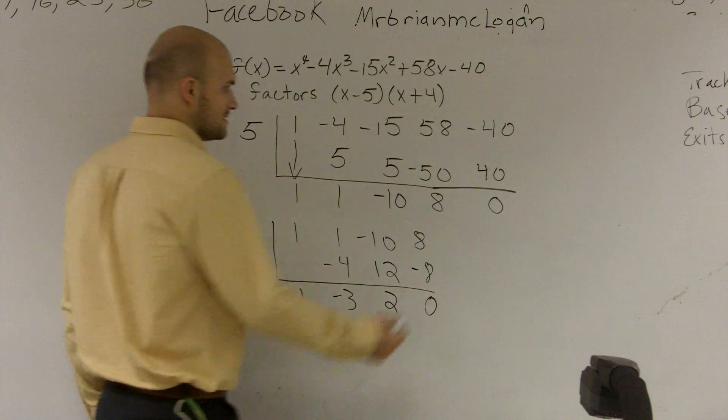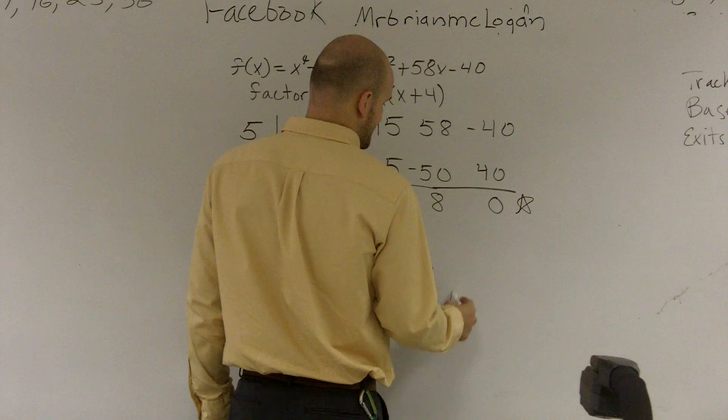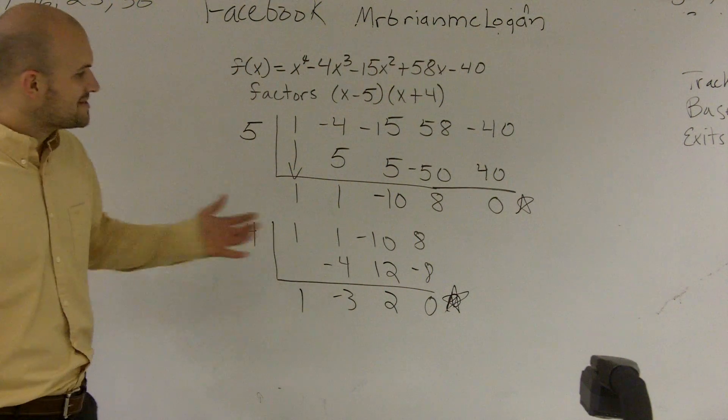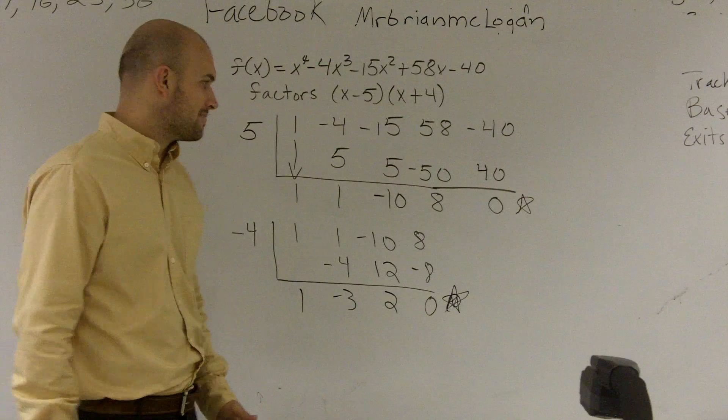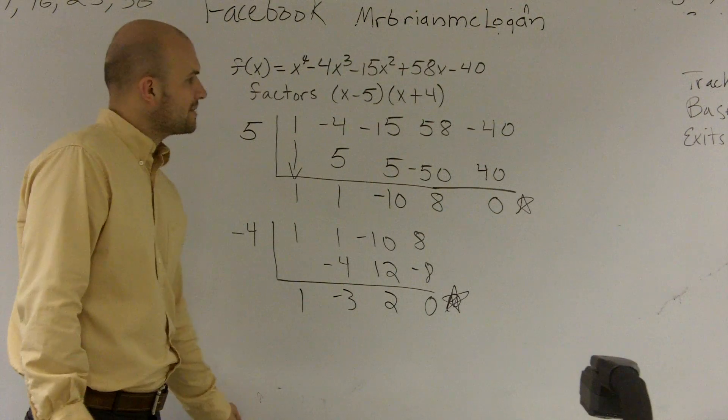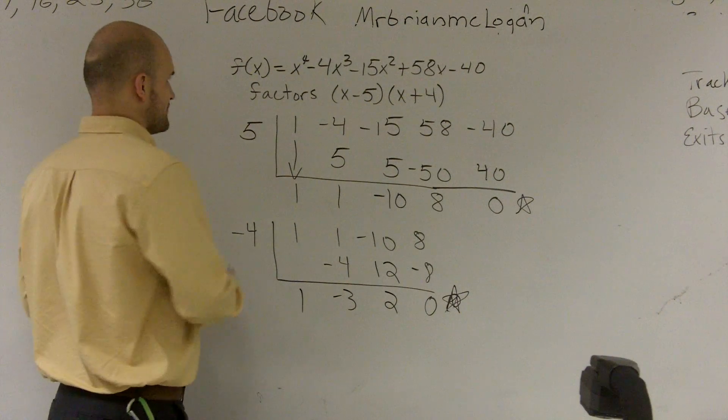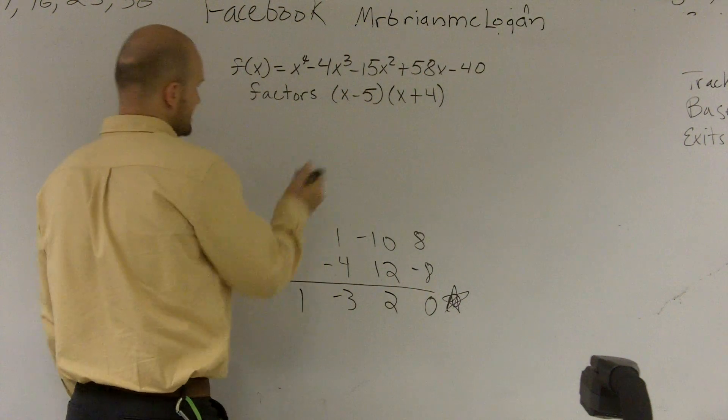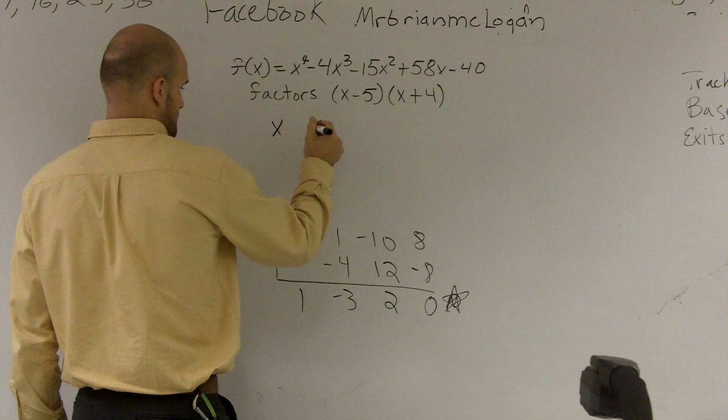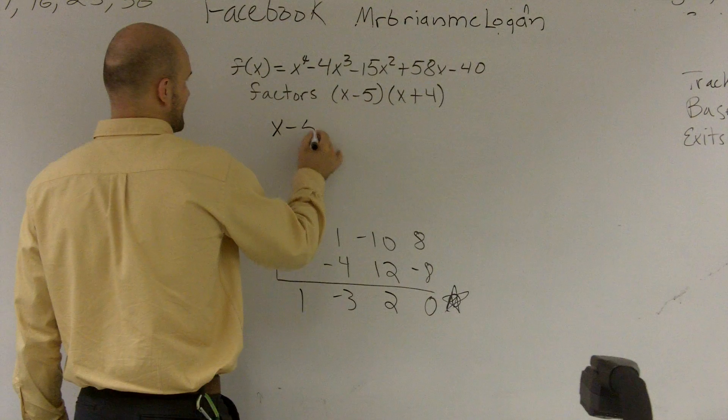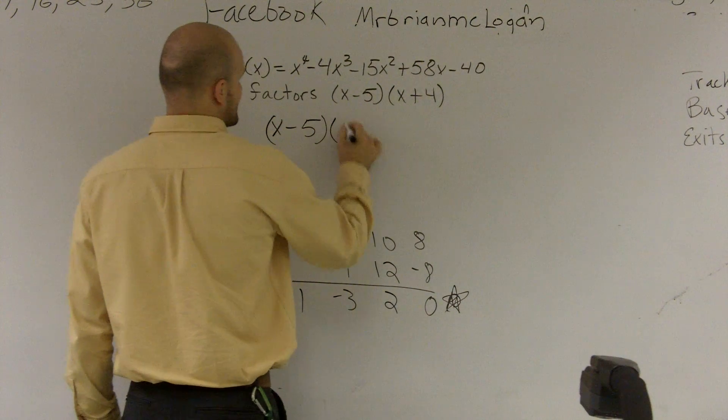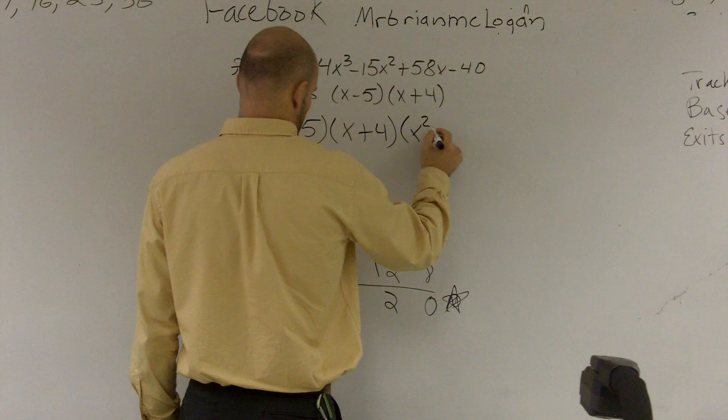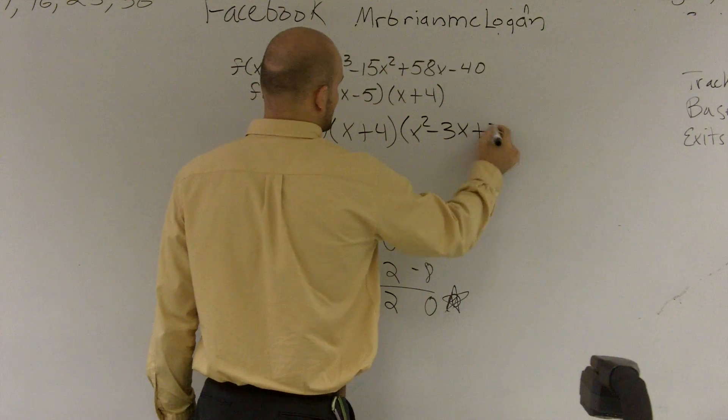So both times, when I use synthetic division, I got 0 as my remainder. So right now, I'm going to write down my linear factors as x minus 5 times x plus 4 times x squared minus 3x plus 2.